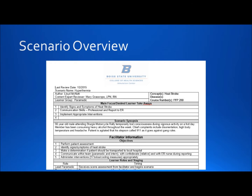To throw in a little bit more fun, I utilize two characters, Clay and Jax, from the hit TV series Sons of Anarchy. The pre-briefing you will give participants is pictured on the slide. So your pre-brief should go something like this: You're arriving on scene to a 66-year-old male attending the Sturgis motorcycle rally who temporarily lost consciousness during vigorous activity on a hot day. A member has been consuming heavy alcohol throughout the week. Chief complaints include disorientation, high body temperature, and headache. Patient is agitated that his stepson called 911 as it goes against gang rules. Any questions? Let's begin.